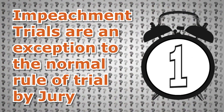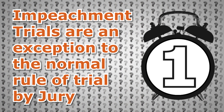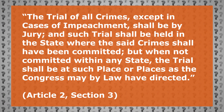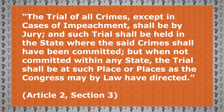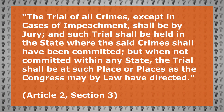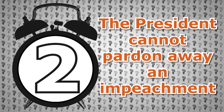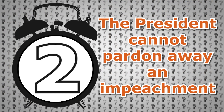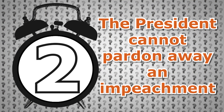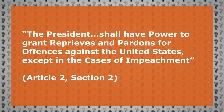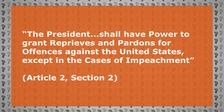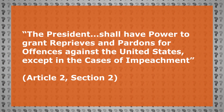Number one: impeachment trials are an exception to the normal rule of trial by jury. As it states in Article 2 Section 3, the trial of all crimes except in cases of impeachment shall be by jury. Number two: while the president has the general power to overrule convictions through pardons, that's not the case when it comes to impeachment. Article 2 Section 2 says the president shall have power to grant reprieves and pardons for offences against the United States except in cases of impeachment.